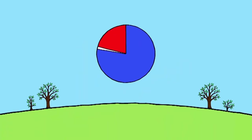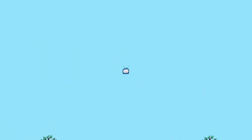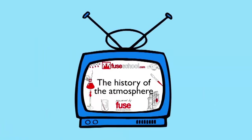Oxygen makes up 21% of the Earth's atmosphere. It has taken many millions of years to make up this composition. Today's atmosphere seems to now have the perfect balance. You may want to check the history of the atmosphere for more details about this.